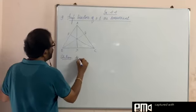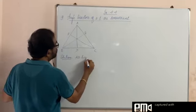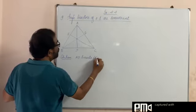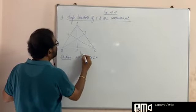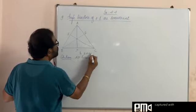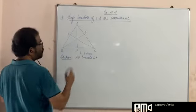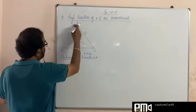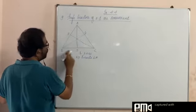This is the solution. AD bisects angle A. So by angle bisector theorem we can write AB by AC is equal to BD by DC.